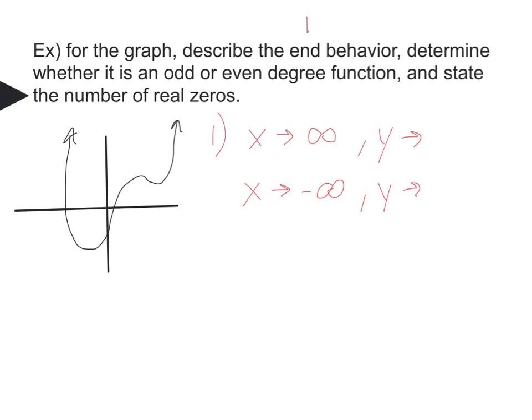If I look at as x approaches positive infinity, meaning going this way, what is y doing? Well, y is going up, so y is also approaching positive infinity. When I go the other direction, as x approaches negative infinity, y is also going up, so y would be approaching infinity in that direction.